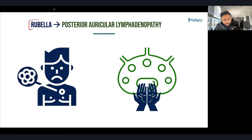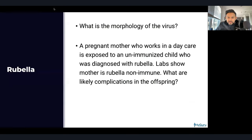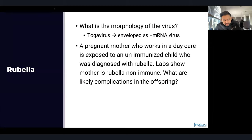The next lymph node association is rubella, which gives you posterior auricular lymphadenopathy. Rubella is a togavirus — it is an enveloped, single-strand, positive mRNA virus.